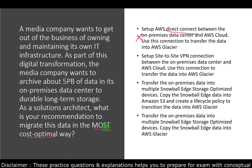Option two — set up a Site-to-Site VPN connection to transfer data into AWS Glacier — Site-to-Site VPN securely connects your on-premises network to a VPC. It is a good solution for immediate needs with low to modest bandwidth requirements. However, the volume here is five petabytes, which would take months to transfer over VPN, so this option is ruled out as well.